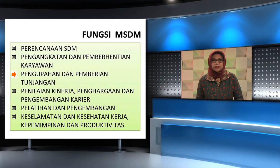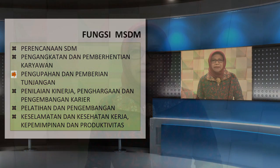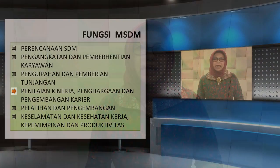Tiga, pengupahan dan pemberian tunjangan. Aktivitas utama pengupahan dan pemberian tunjangan mencakup: A. Pendesainan dan implementasi sistem kompensasi bagi semua karyawan. B. Memastikan bahwa kompensasi adil dan wajar serta konsisten. C. Pendesainan dan implementasi sistem tunjangan bagi semua karyawan.